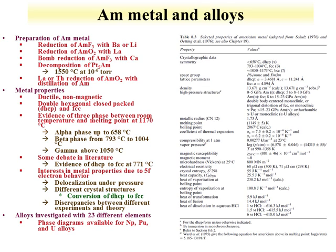Important compounds of americium for the nuclear fuel cycle start with the metal and the alloys. Americium metal can be produced by a number of reduction reactions, starting with the fluoride with liquid barium or lithium. The oxide can be formed with the lanthanum species, and there are a number of other reduction routes available.